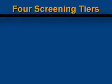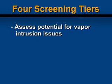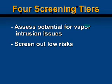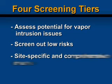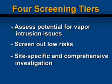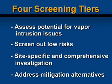The evaluation process, as described in E2600, consists of four screening tiers. The first two screening tiers are used to assess the potential for a vapor intrusion issue to exist so that properties with a low risk can be screened out quickly and inexpensively. The third tier provides for more site-specific and comprehensive investigations if the potential for vapor intrusion cannot reasonably be eliminated at the Tier 1 or Tier 2 levels, while Tier 4 addresses mitigation alternatives.